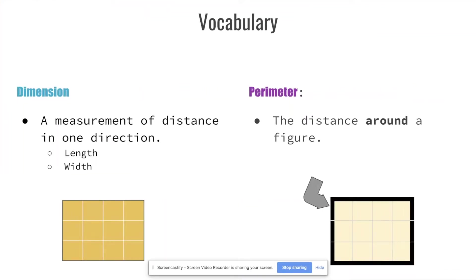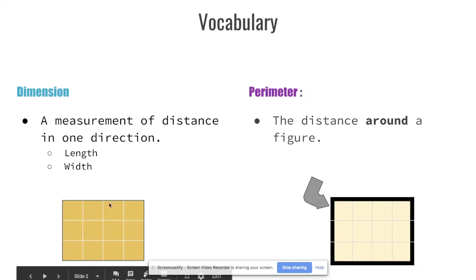Let's go over some vocabulary before we start. A dimension is a measurement of distance in one direction. We're going to look at two different dimensions: length and width. Length is the distance going in one direction, and you can see these two sides going in the same direction — that's the length. Width is going in another direction.